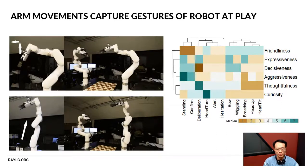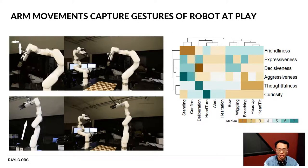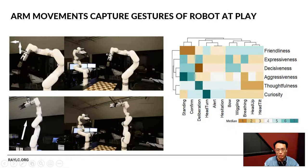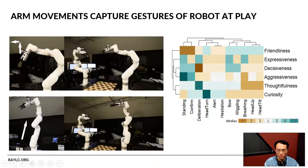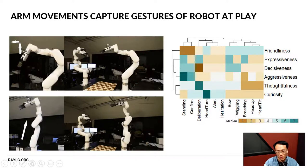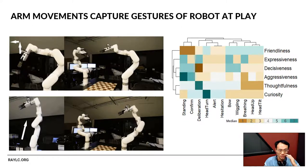We gave surveys to over 30 people to understand how they would interpret these different types of robot actions after watching the video. This graph shows how the audience interprets each gesture along dimensions such as how friendly they are and how expressive they are. These are all the different gestures we were considering, which is a subset of the ones that went into the actual artwork itself.